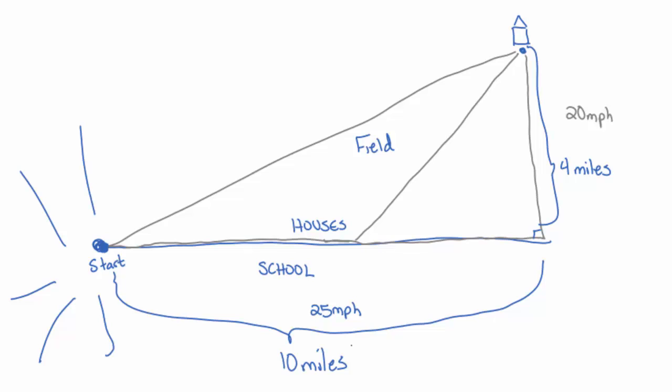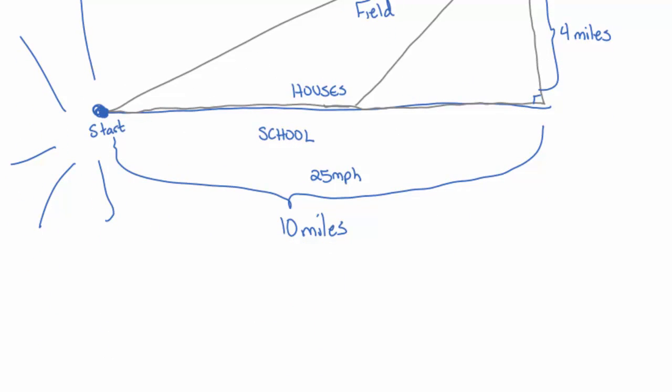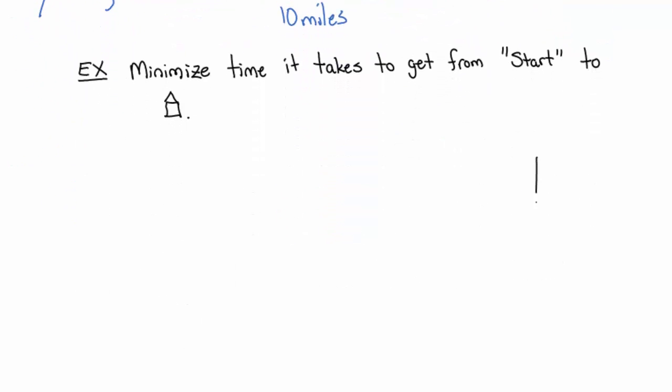So minimize the time to get to your house from start to house. That's the example: minimize time it takes to get to the house. Let's redraw this with solid numbers. I know that distance is four, this distance is ten, I know the speed along those roads, but it's an emergency vehicle.